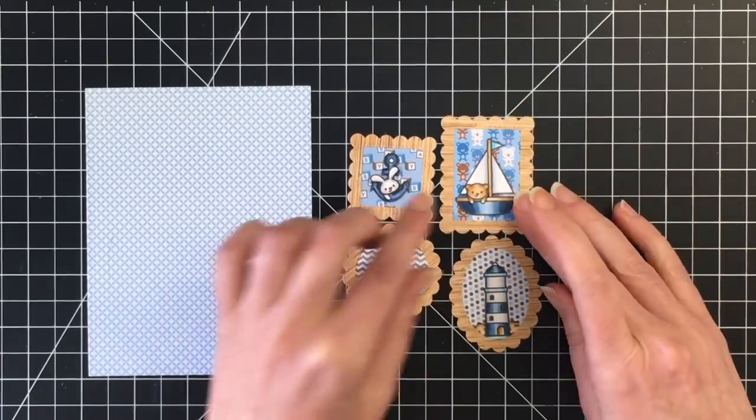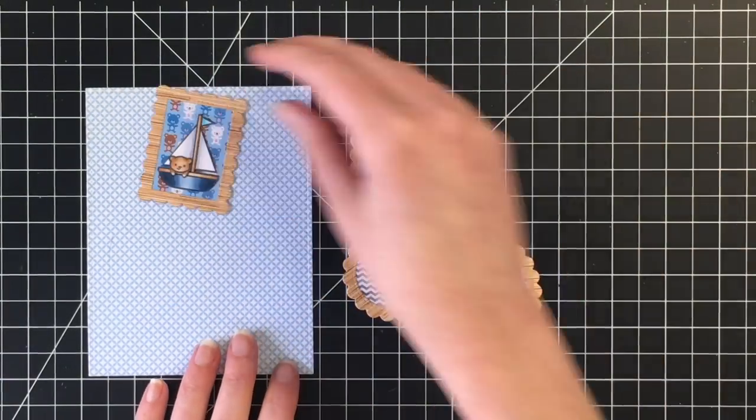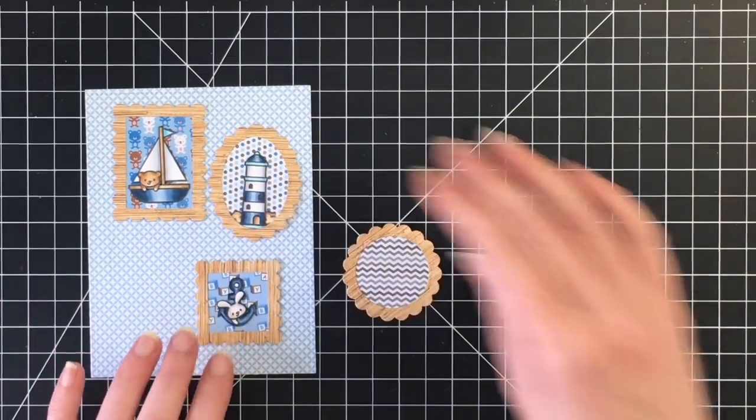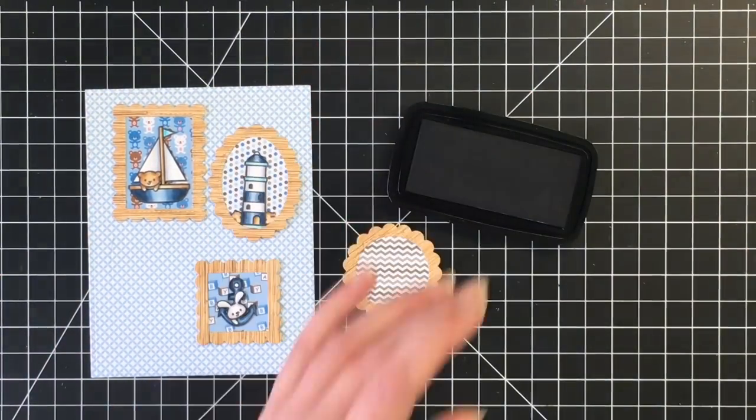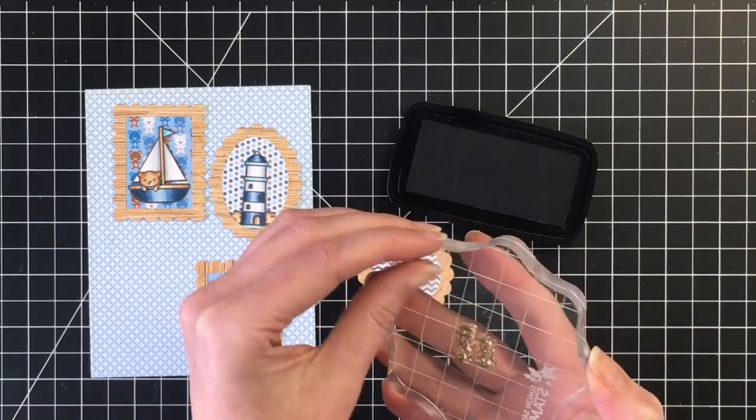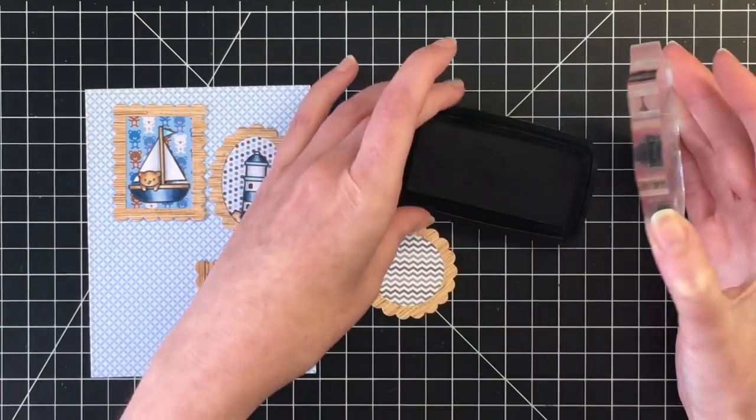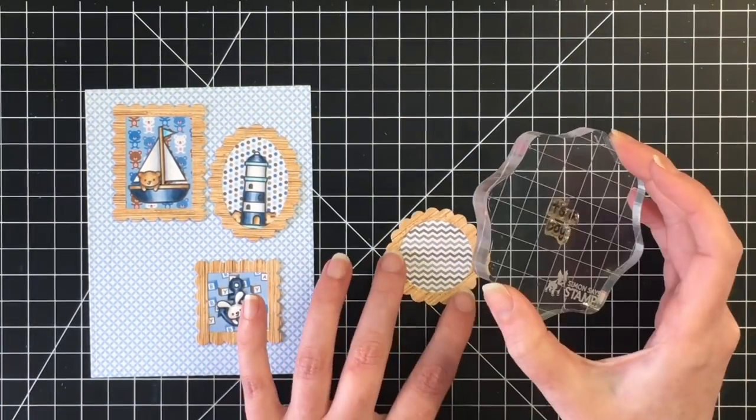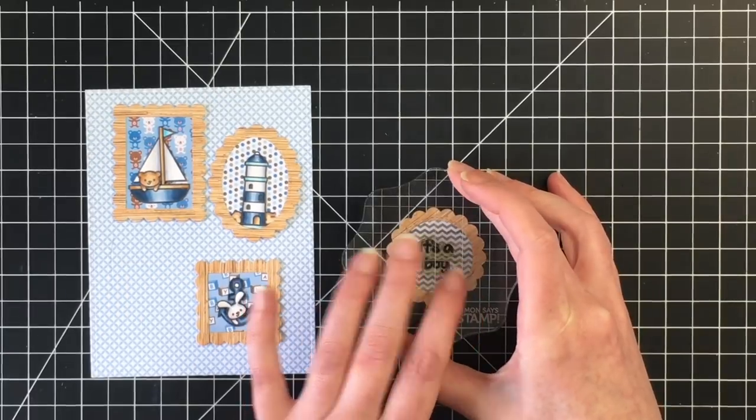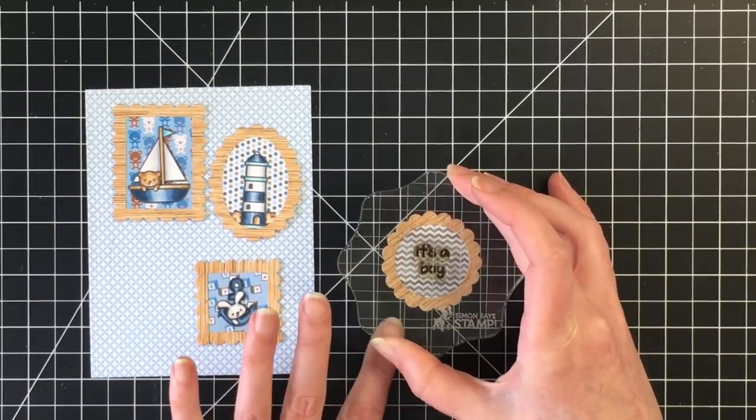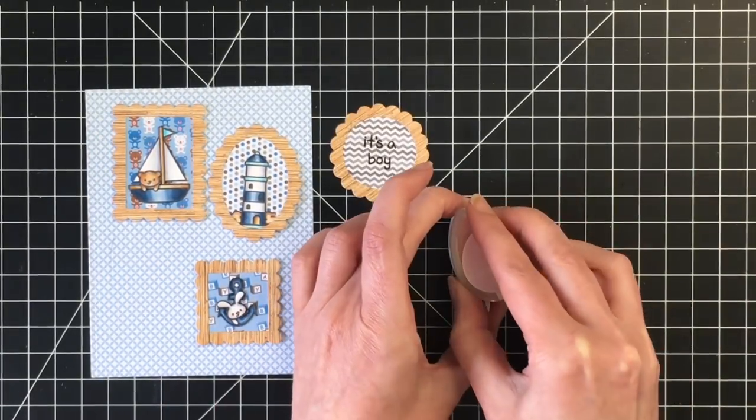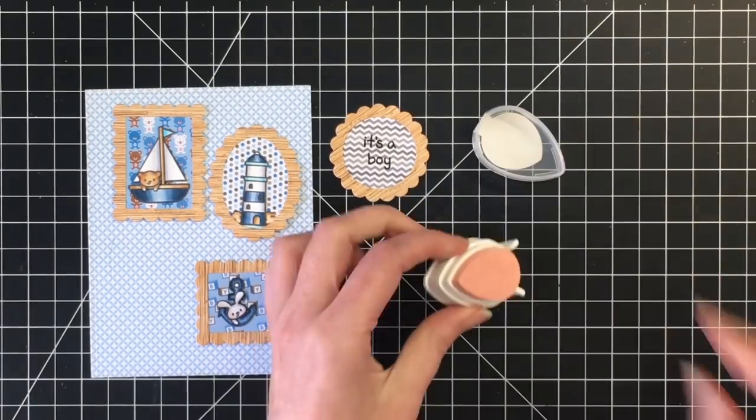For the circular one I'm going to stamp the sentiment. So I'm just trying to figure out how I might want this to look on the card and moving those out of the way so I can stamp the sentiment It's a Boy. And that, like I said, is from the Lawn Fawn Plus One stamp set. So I love how you can mix and match stamp sets to create fun cards.